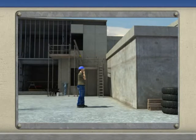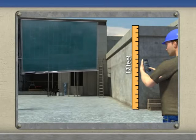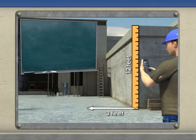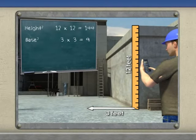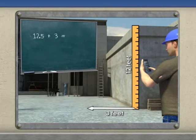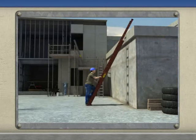To illustrate how ladder height calculations work in the field, let's follow Jack as he selects a ladder to access the roof of a 12 foot building. Using the one quarter rule, the base of the ladder should be about 3 feet from the building. He multiplies 12 by itself to get 144, and 3 by itself to get 9. Adding those together gives 153, and the square root of 153 is approximately 12.5 feet. Adding 3 feet so the ladder extends properly above the roof, Jack determines he needs a ladder at least 15.5 feet long.